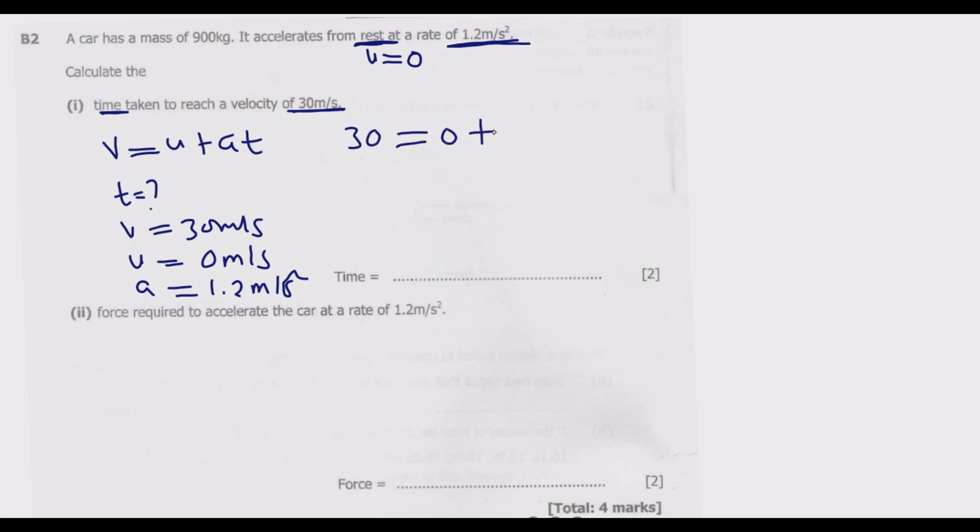Then we are looking for time, so it will be T. So 30 equals zero plus anything is that thing, equals 1.2T. Then we divide by 1.2, and that cancels. Then T equals 30 divided by 1.2.